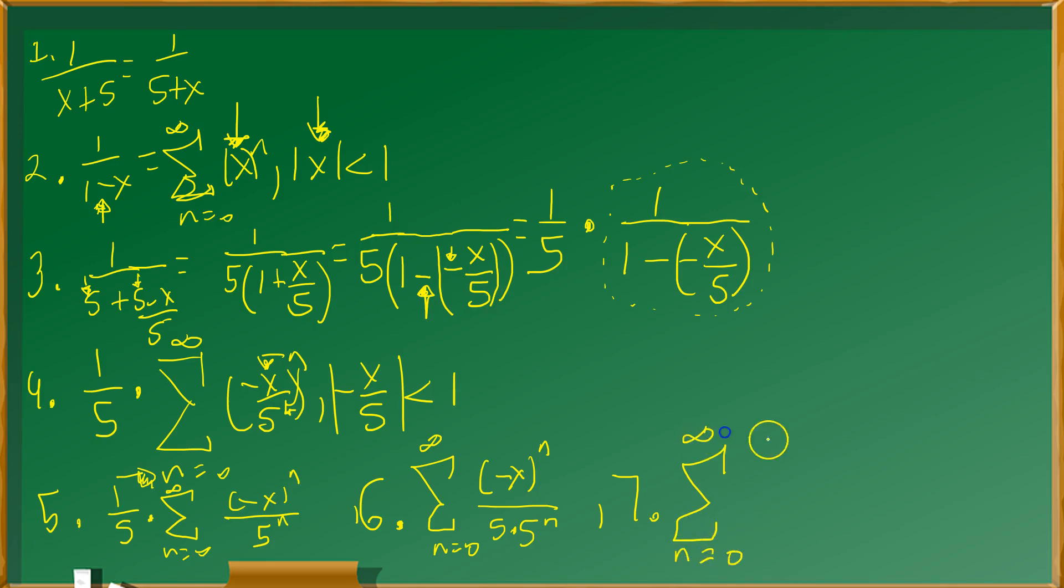n goes from 0 to infinity. Negative x. And then on the bottom take a look. Back at step number 6 in the bottom, I have 5 to the first times 5 to the n. That's 5 to the n plus 1. That's a basic rule of exponents. You have the same base of 5, so then you add up the exponents. That's it.